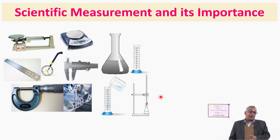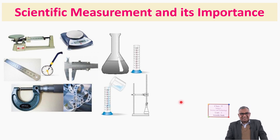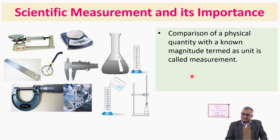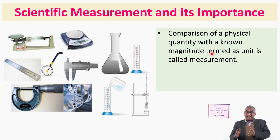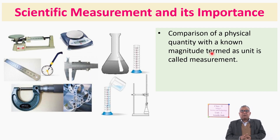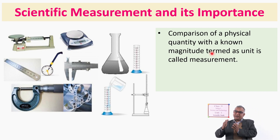Can you recall what those who invent different measuring tools are called? I told you — metrologists. Yes, metrologist and meteorologist — two different terms I told you last time. So, what is scientific measurement? The comparison of a physical quantity with a known magnitude termed as a unit is called measurement. By using different instruments, we measure different physical quantities and express them with a number and related units.